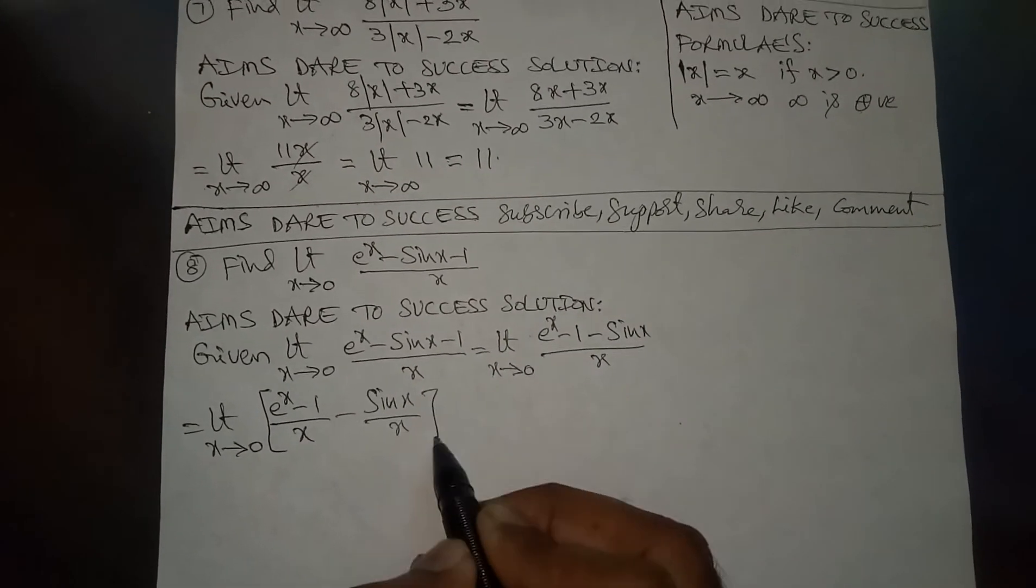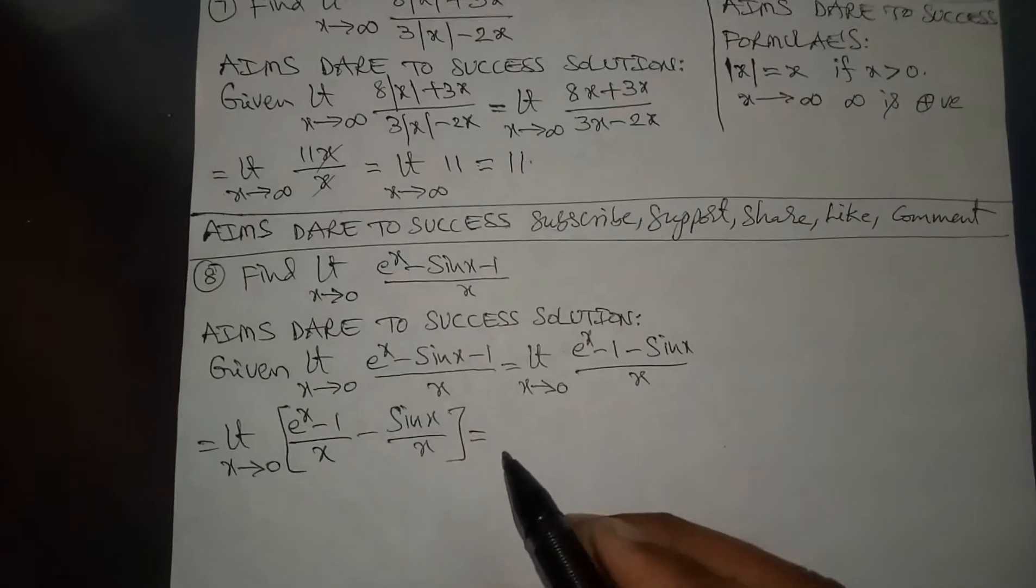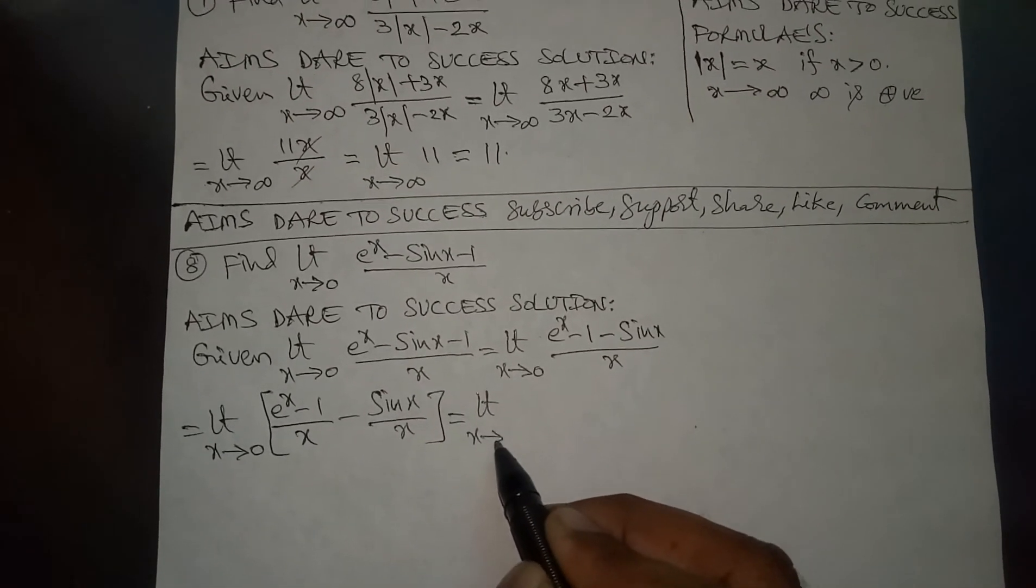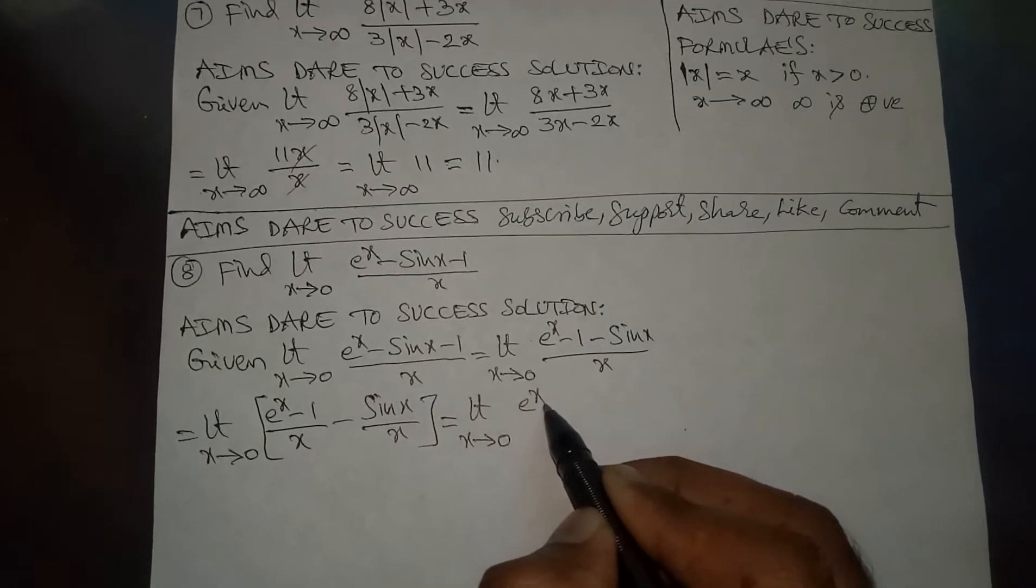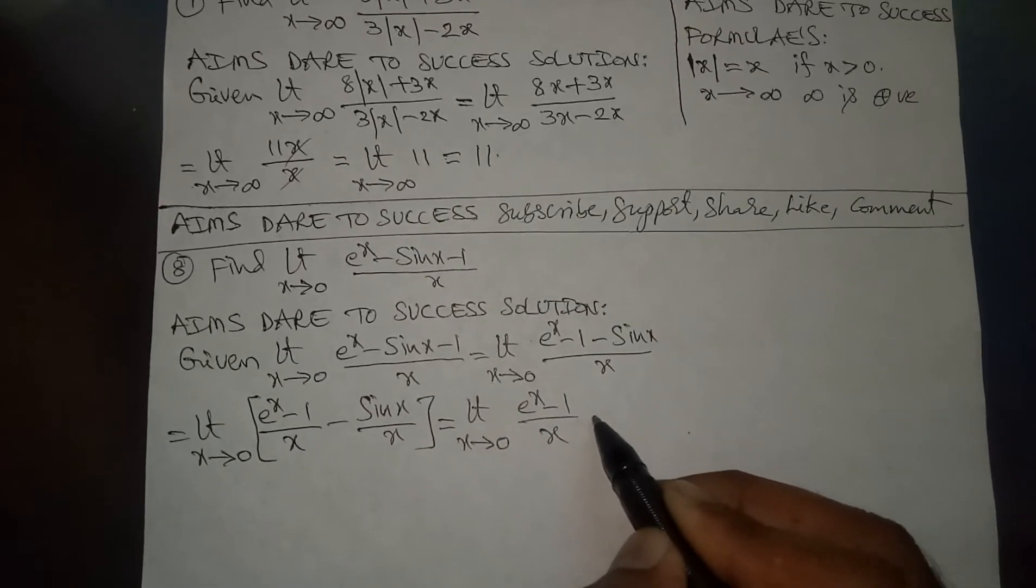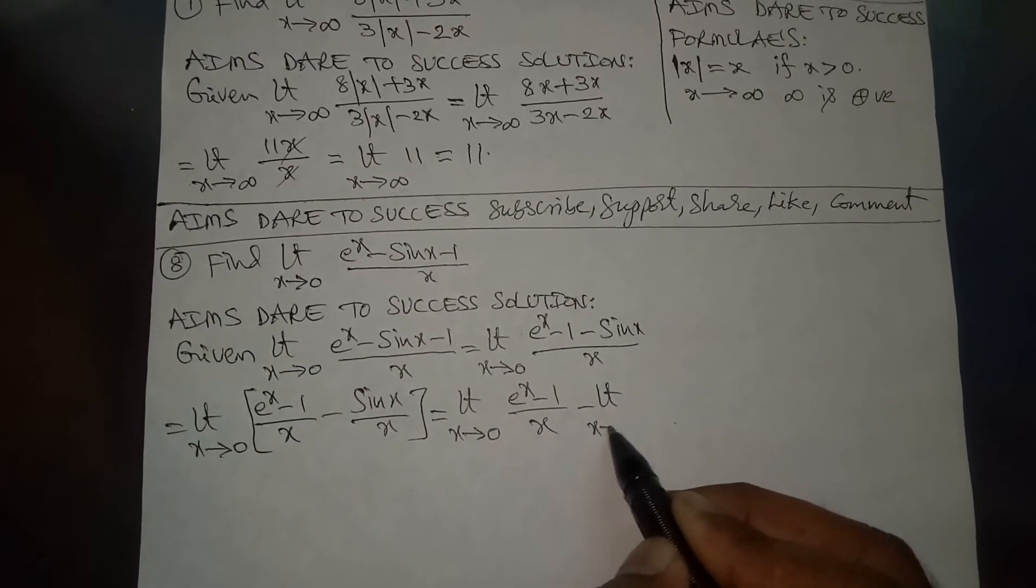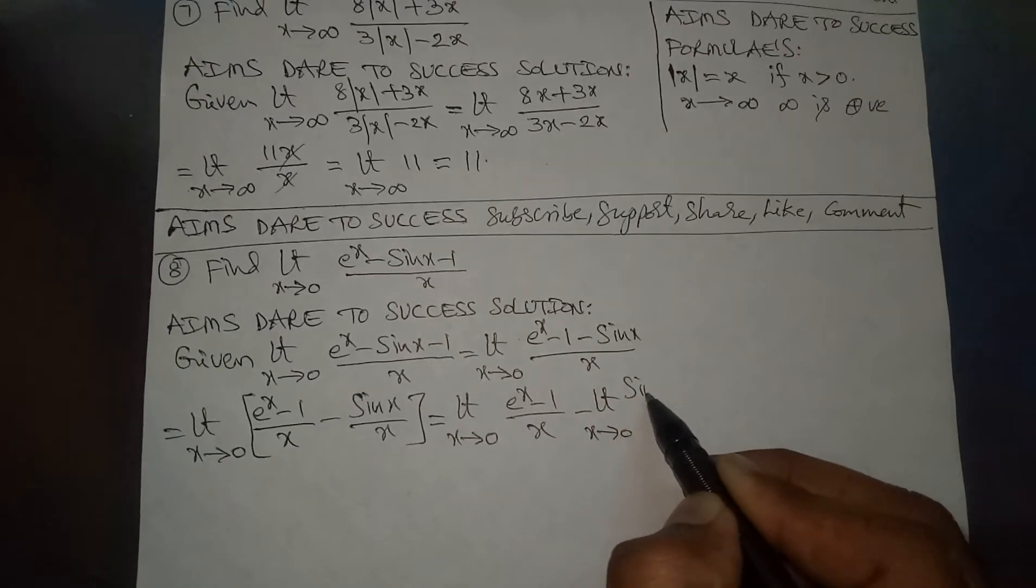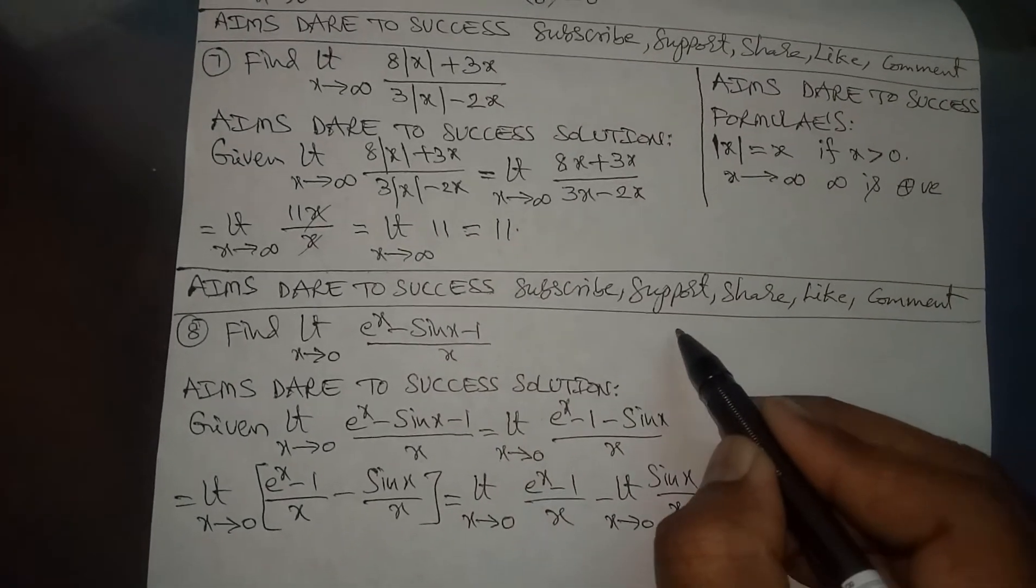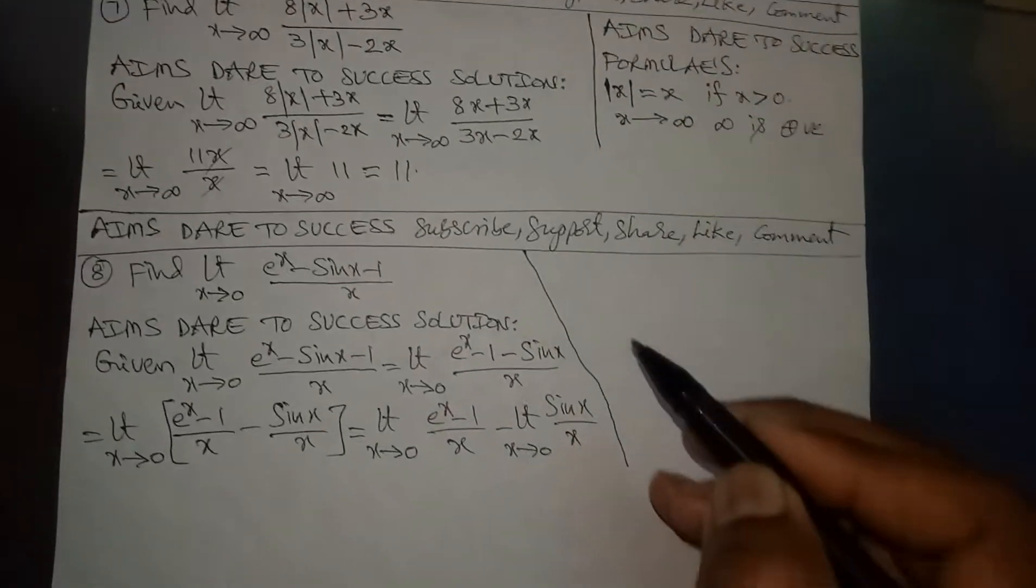So apply limit separately: limit x tends to 0 of (e^x - 1) / x minus limit x tends to 0 of sin x / x. Here I want to write formulas.